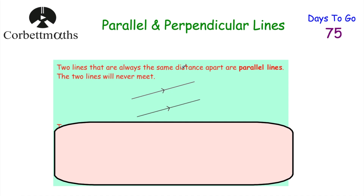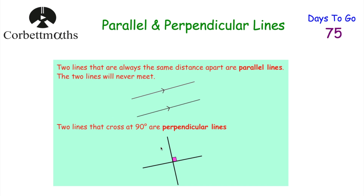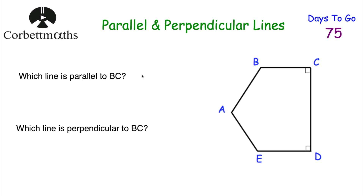Finally, let's look at parallel and perpendicular lines. Two lines that are always the same distance apart and never cross each other are called parallel lines — they go in the same direction and will never meet. If two lines cross each other at 90 degrees, they're called perpendicular lines. Here's a question using a pentagon labelled A, B, C, D, E: which line is parallel to BC, and which line is perpendicular to BC? BC is horizontal, and ED is also horizontal — they go in the same direction and would never meet, so ED is parallel to BC. CD meets BC at 90 degrees, so CD is perpendicular to BC.